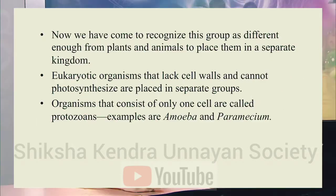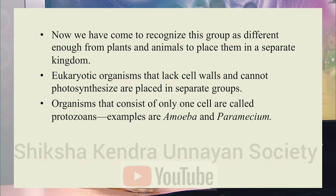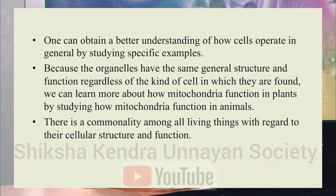There is another group that contains a cell wall but lacks chloroplast — that is fungi. Eukaryotic organisms that lack a cell wall and cannot photosynthesize are placed in a separate group. Organisms that consist of only a single cell are called protozoans, like amoeba and paramecium. On that basis, they are divided into a number of different groups.